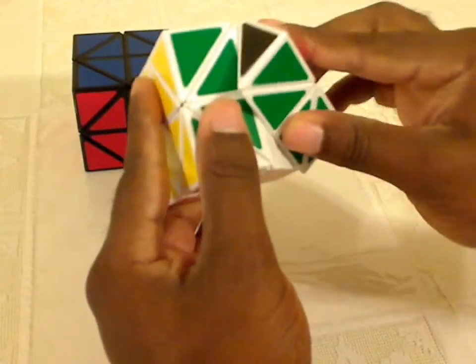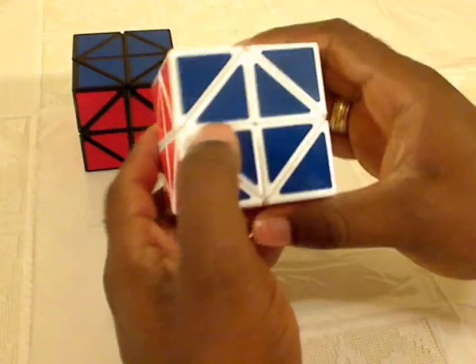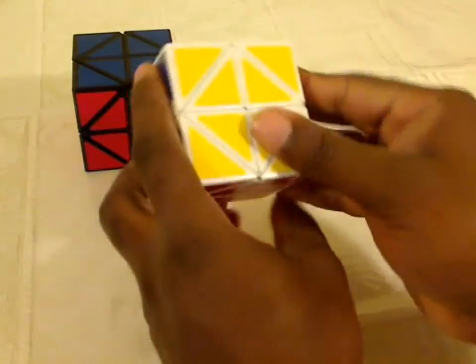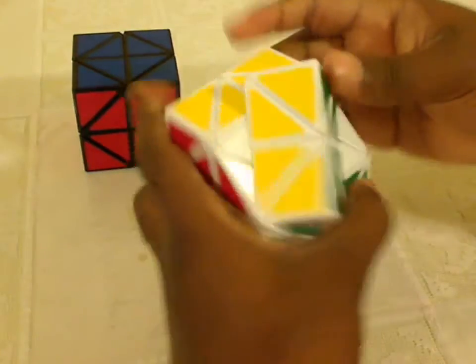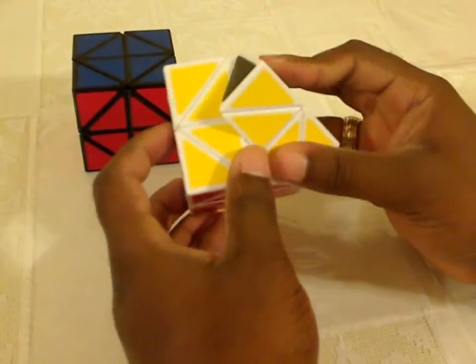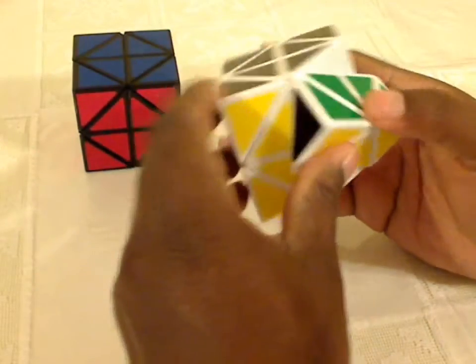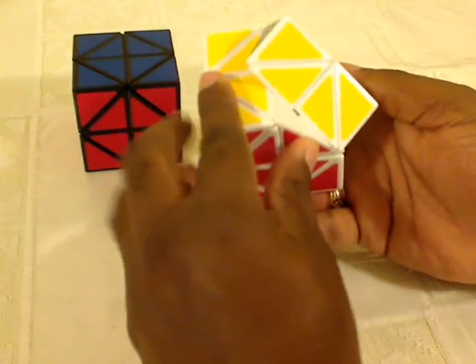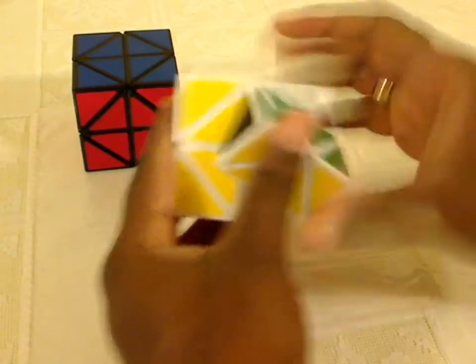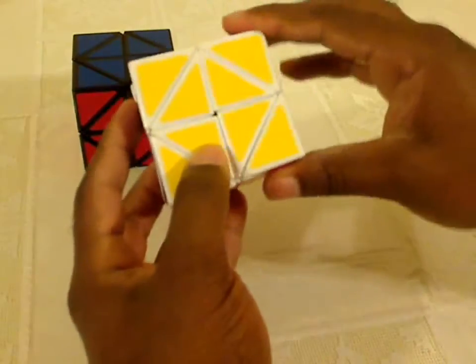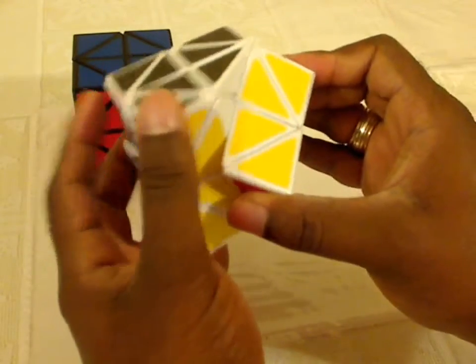But if I get another shape, let's choose a different color. Let's choose the yellow side and turn it a little bit. Now we should be able to turn this top section. Whoops. Let's choose a side that can turn. I don't think I have that aligned correctly. Let's try this.